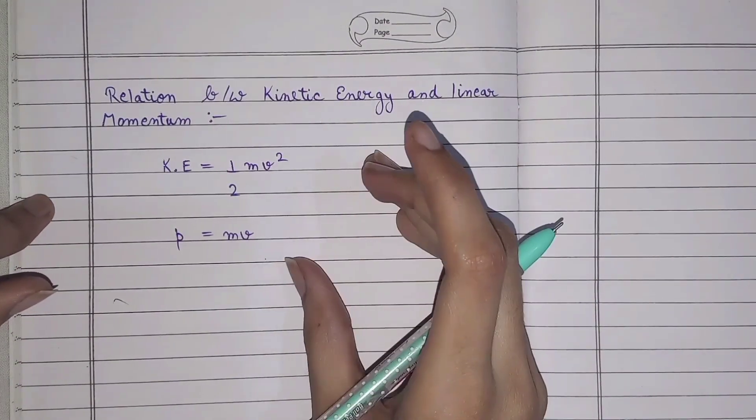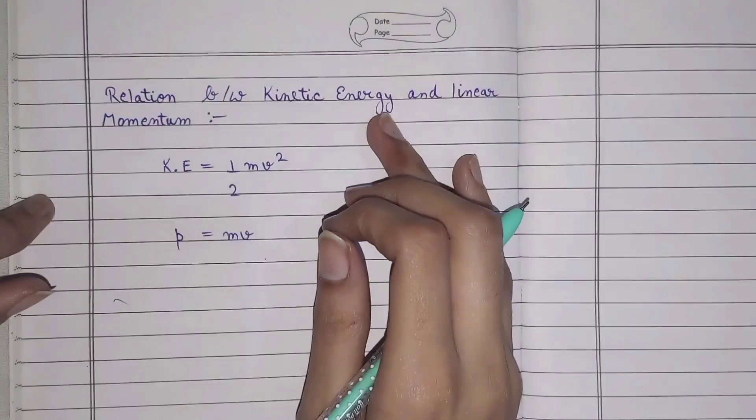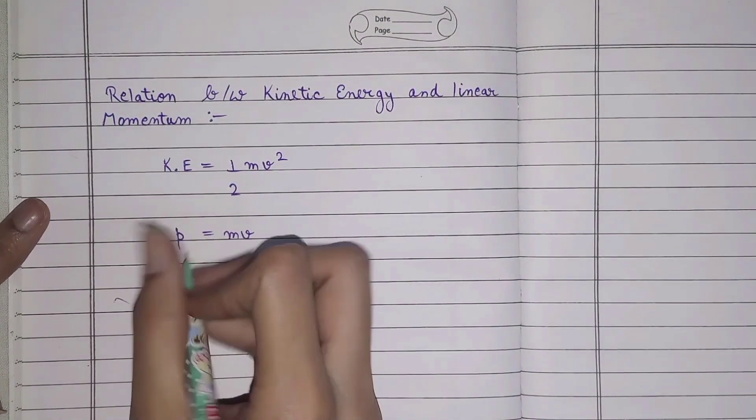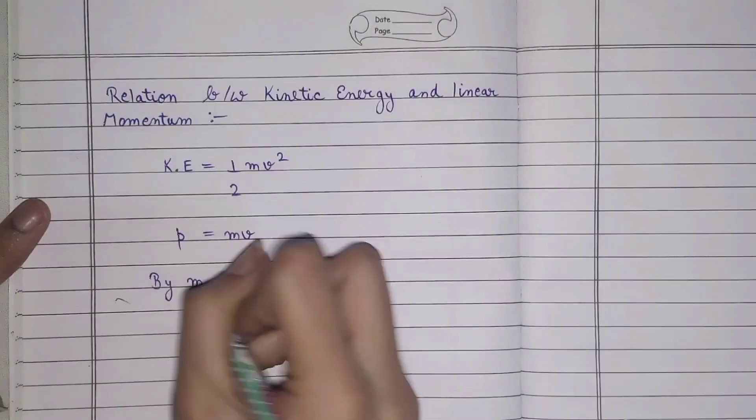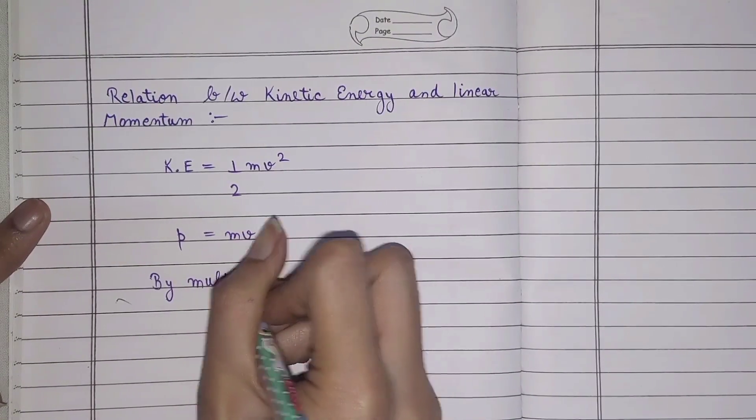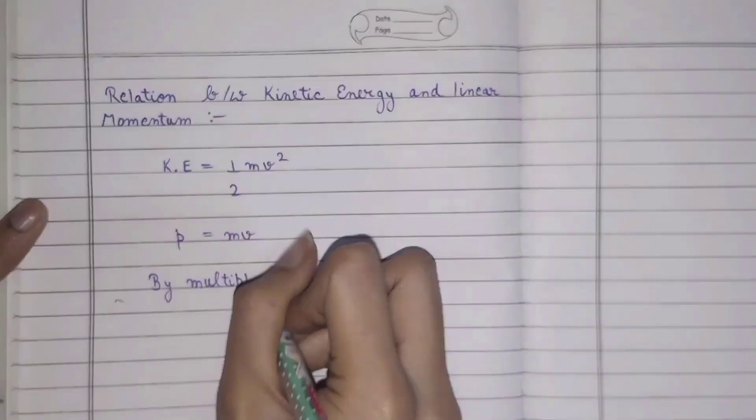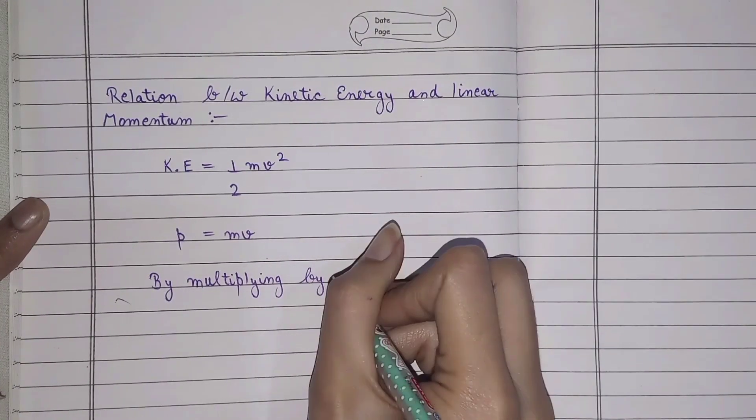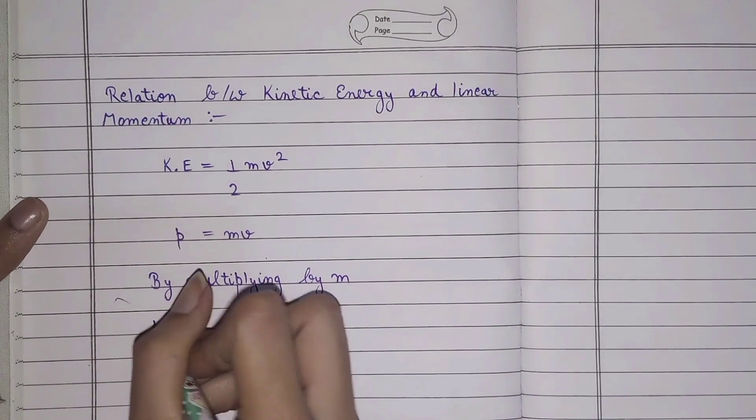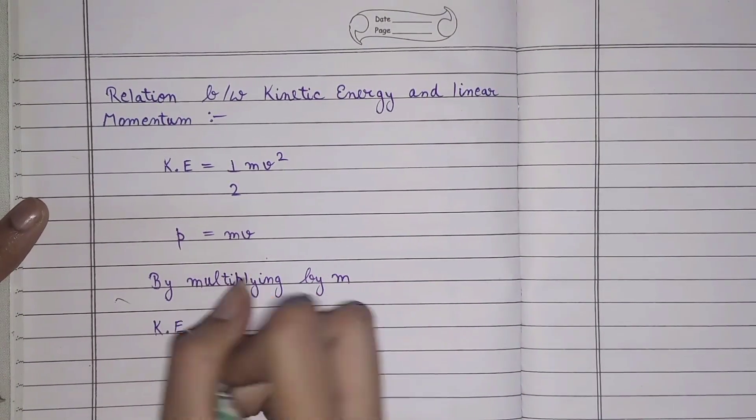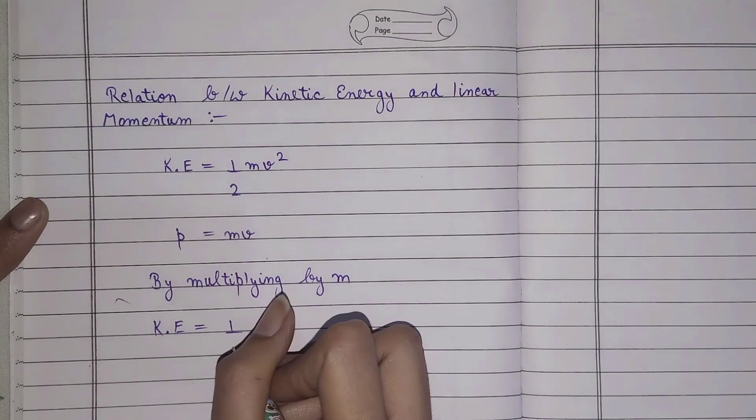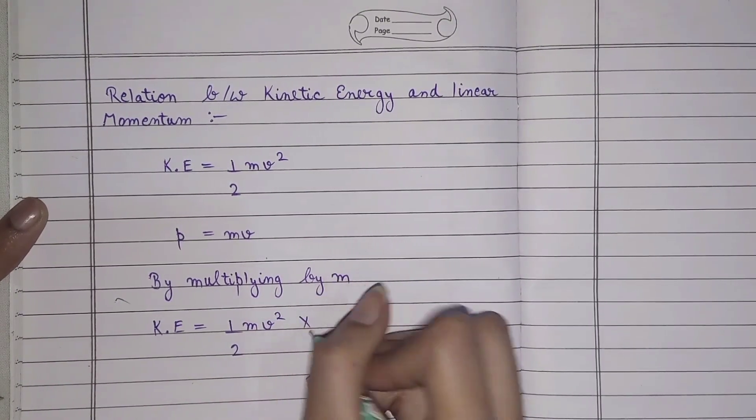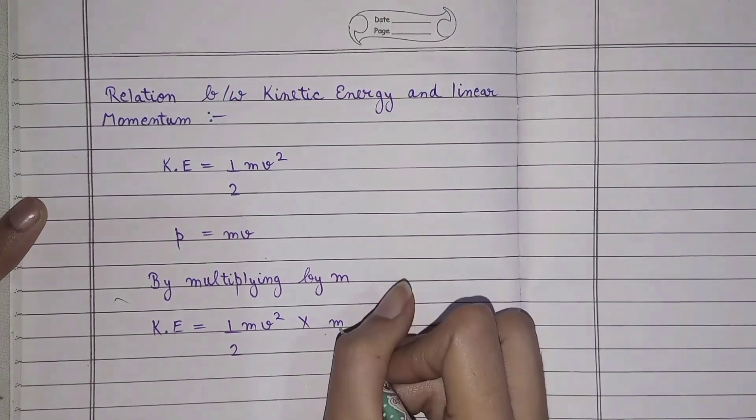To derive this relation, what we'll do is multiply the kinetic energy formula by m. So step number one: by multiplying by m, kinetic energy is equal to 1/2 mv² multiplied by m/m.